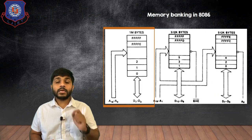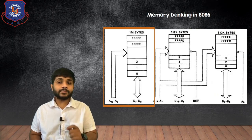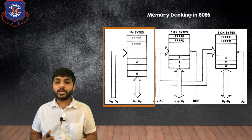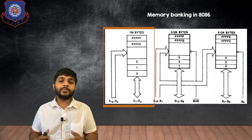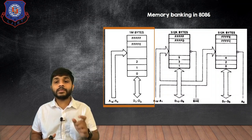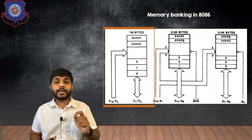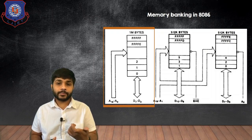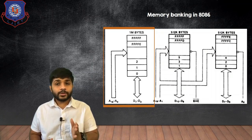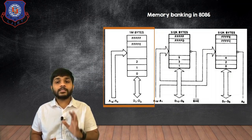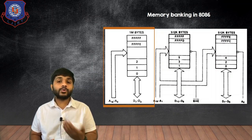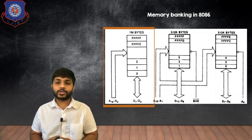The 8086 is a 16-bit microprocessor, meaning it can process 16-bit data at a time, so the size of the data bus is 16-bit. The size of the address bus is 20-bit, so you can access 2 raised to the power of 20 memory locations.